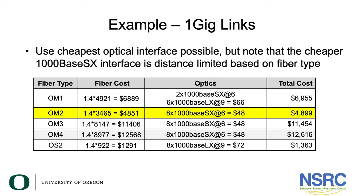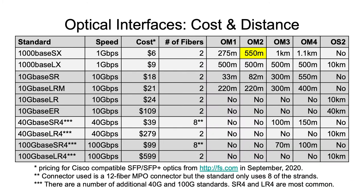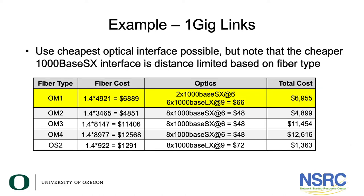For OM2, it supports gigabit for 500 meters, which covers the farthest building, so we can use the less expensive optics for all links. With OM1 it would cost $66 for the optics; with OM2 we only need eight of the less expensive interfaces at $48. The fiber cable itself is cheaper too — 1.4 times the cost per kilometer comes to around $5,000.